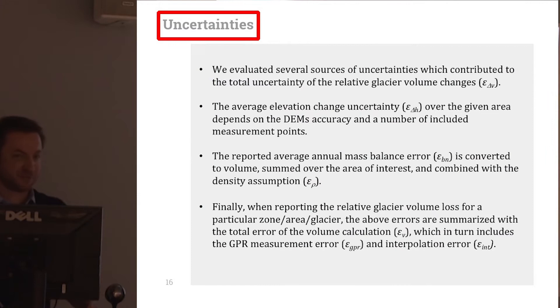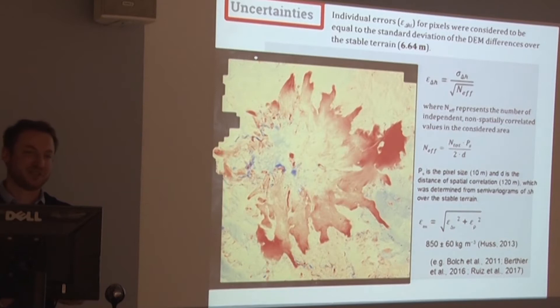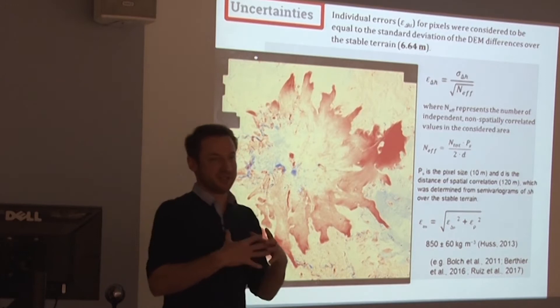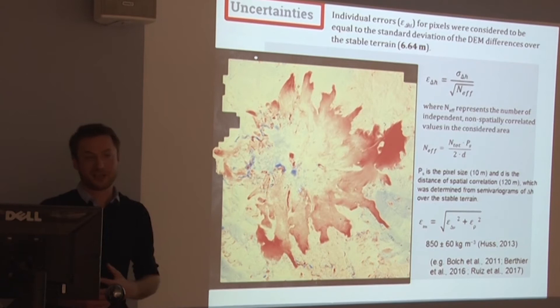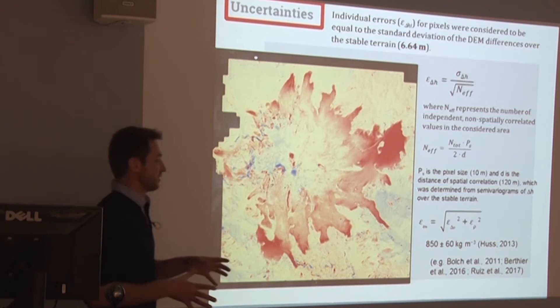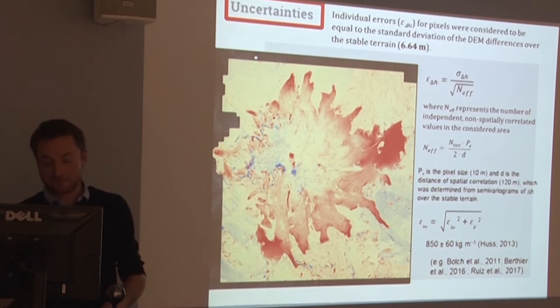I won't stop long on the uncertainty estimations, but there are many uncertainties involved in this work: uncertainty of the GPR, uncertainty of constructing the ice thickness map — that is interpolation uncertainty — then uncertainties in the differencing of the two digital elevation models, and finally uncertainty in the density assumptions. But we calculated all of them.